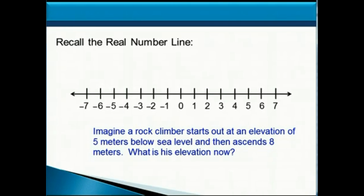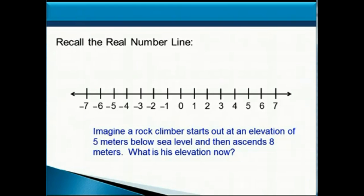Imagine a rock climber starts out at an elevation of 5 meters below sea level, so that would be represented by negative 5 on the real number line, and then ascends 8 meters. Ascends means he's increasing his elevation, so he is adding 8 meters to his current elevation of 5 meters below sea level, and we want to know what is his elevation now.